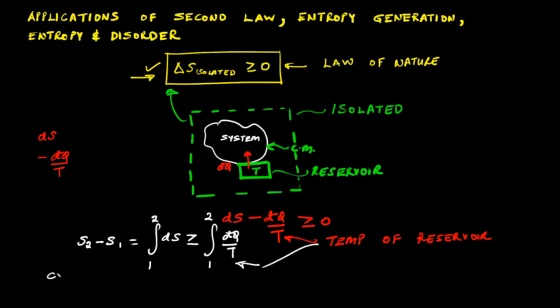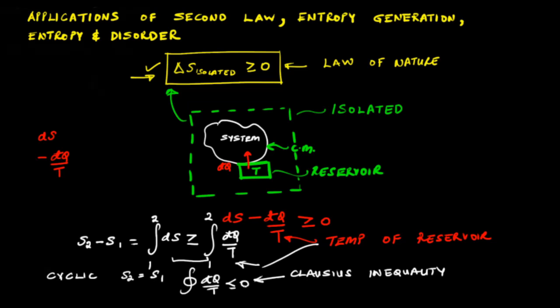For a cyclic process, S2 minus S1 is going to be zero because the system comes back to its original state. And we can write this equation as the cyclic integral of dq/T is less than or equal to zero. This is our Clausius inequality. Note that in the Clausius inequality, T is the temperature of the thermal reservoir, as we have seen throughout our current discussion.